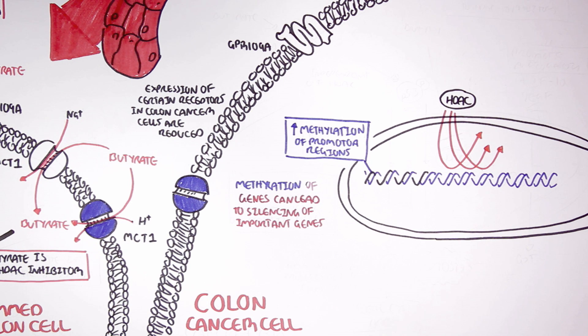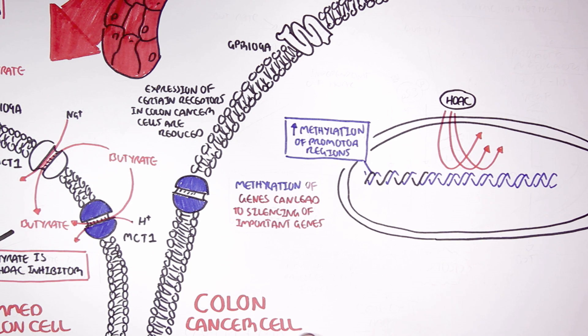Now, colon cancer cells love to proliferate. At the same time, these cells require more and more energy and nutrients. In order to do so, there is an increase in HIF1 alpha and VEGF.